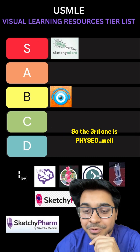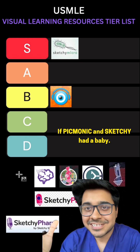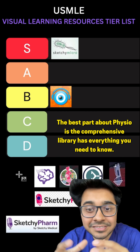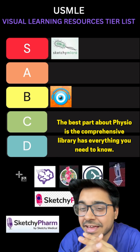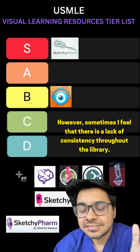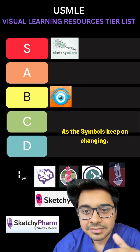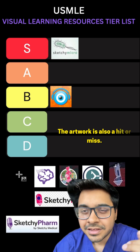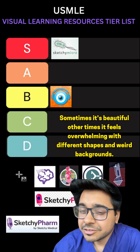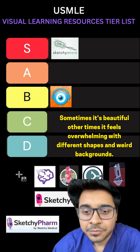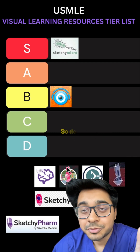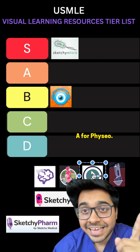The third one is Physio. If Picmonic and Sketchy had a baby, it would definitely be Physio. The best part about Physio is the comprehensive library — it covers everything you need to know. The symbols are great; however, I find there's sometimes a lack of consistency throughout the library as the symbols keep changing. The artwork is also a hit or miss — sometimes it's beautiful, other times it feels overwhelming. I do love the genetic disorder section in Physio. A for Physio.